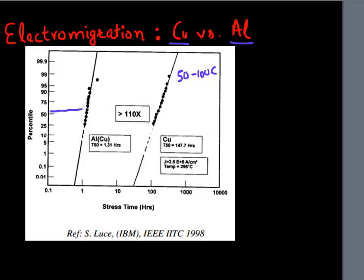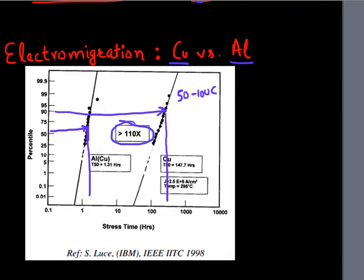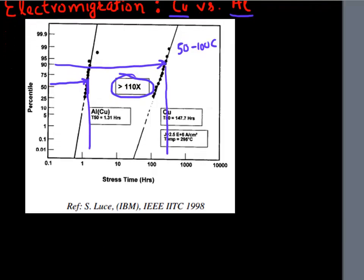So shown here is the failure time for aluminum. And we can see that copper has, it improves this, it improves the stress time by more than 100X. So that's another advantage you get by moving to copper. So copper technology is very, again, very pervasively used in the semiconductor industry.